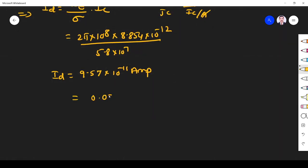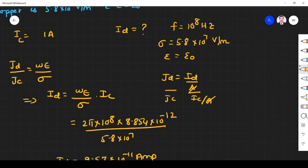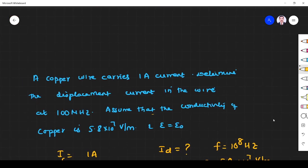Id is approximately zero. So displacement current through copper is zero. That is well known because copper is a conductor. A conductor has only conduction current, displacement current is zero.